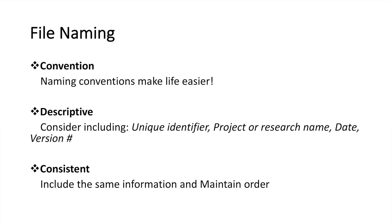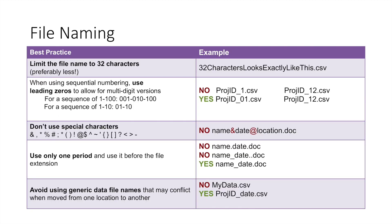First, let's look at file naming. Convention means you should have a file naming system or habits and follow it. The name of files should be descriptive and consistent. Best practices include limiting the file name to 32 characters, using leading zeros, avoiding special characters, using only one period, and avoiding generic file names.